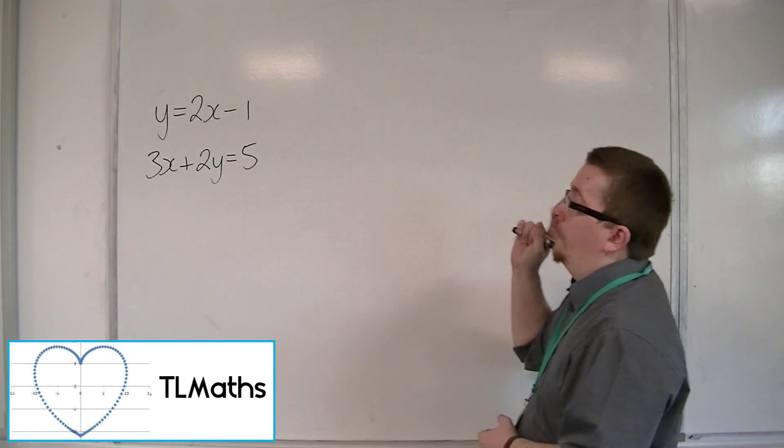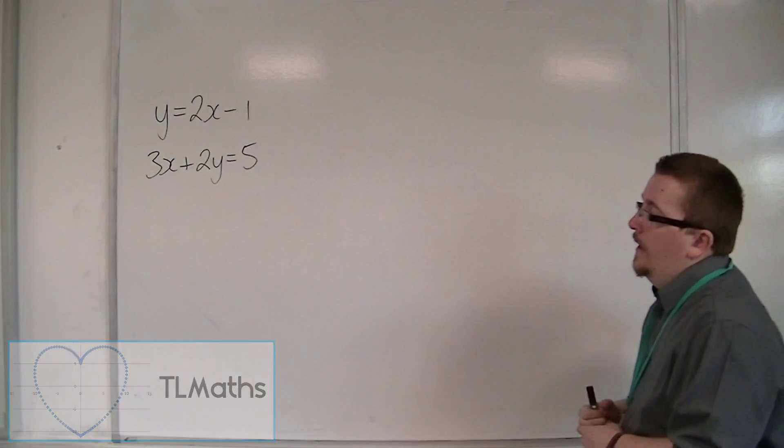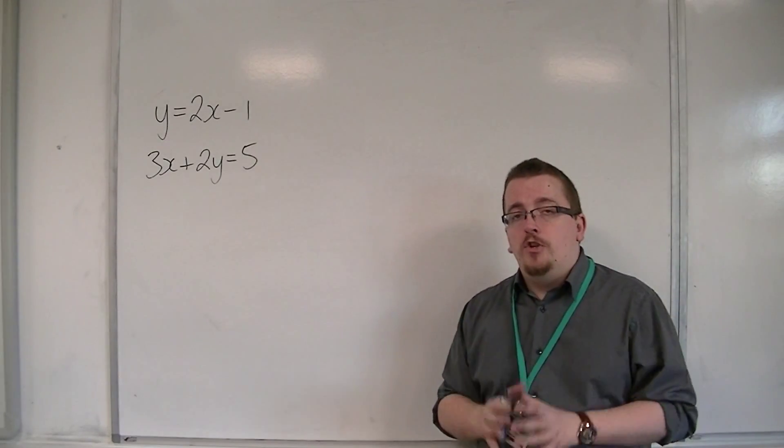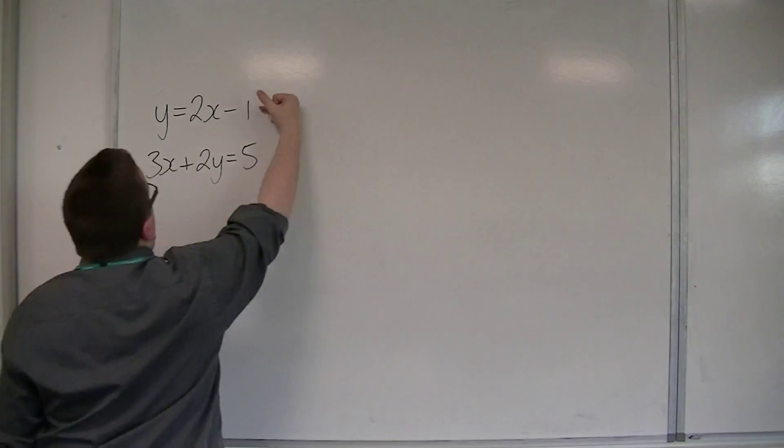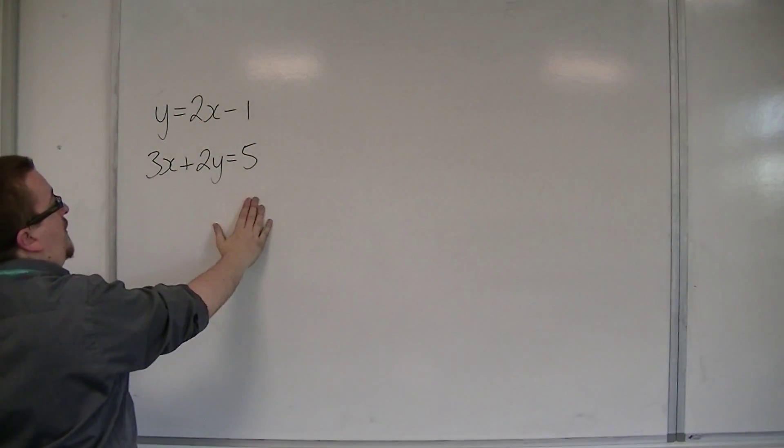So we want to find the intersection of these two lines this time, and I'm going to show you a different variation of simultaneous equations. So if y is equal to 2x minus 1, and 3x plus 2y is equal to 5,